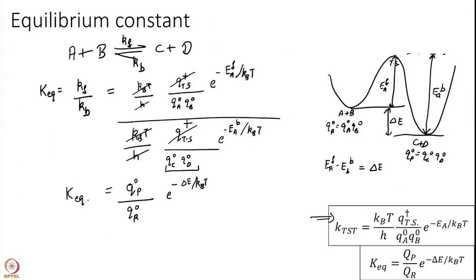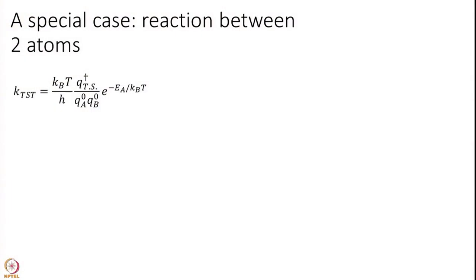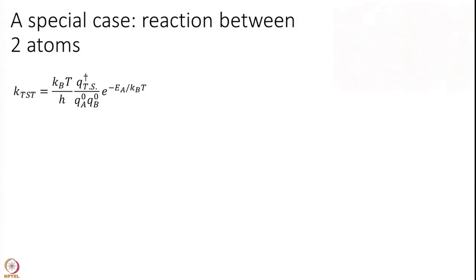This is exactly what you expect based on thermodynamics — a relation I derived a few modules ago when discussing statistical mechanics. This relation matches thermodynamics perfectly, which is very good news. We have made tremendous progress compared to collision theory, where we got the wrong equilibrium constant. In Transition State Theory we get the correct equilibrium constant. The second thing I want to discuss is the rather interesting connection between Transition State Theory and collision theory.